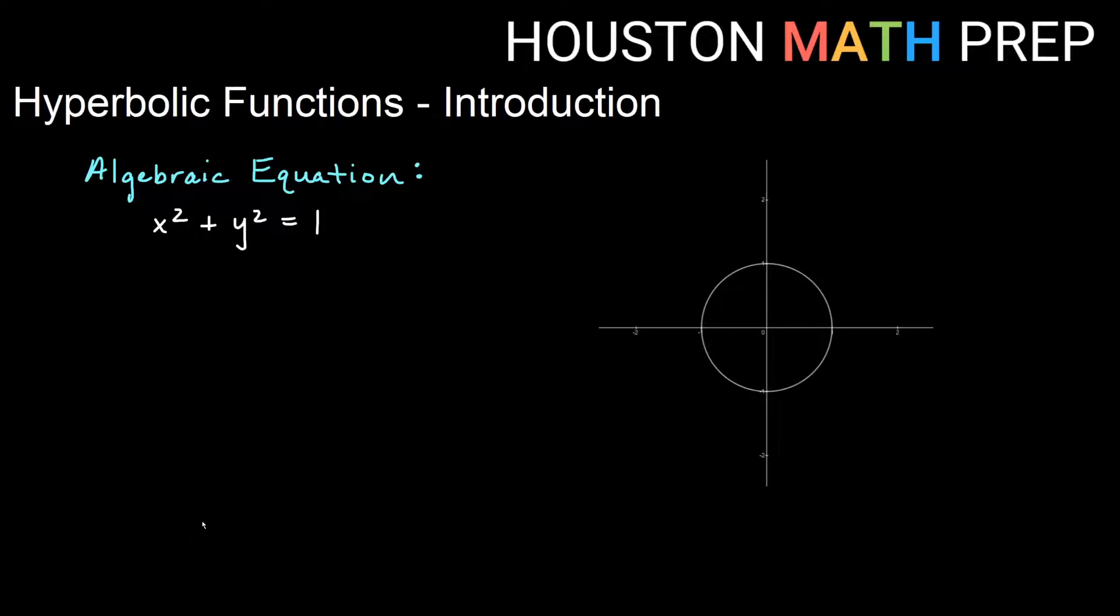Hey everyone, Houston Math Prep here. When we start out in algebra and we first learn about circles, we learn something like x squared plus y squared equals 1, and we learn that that's a circle with radius 1 centered at the origin.